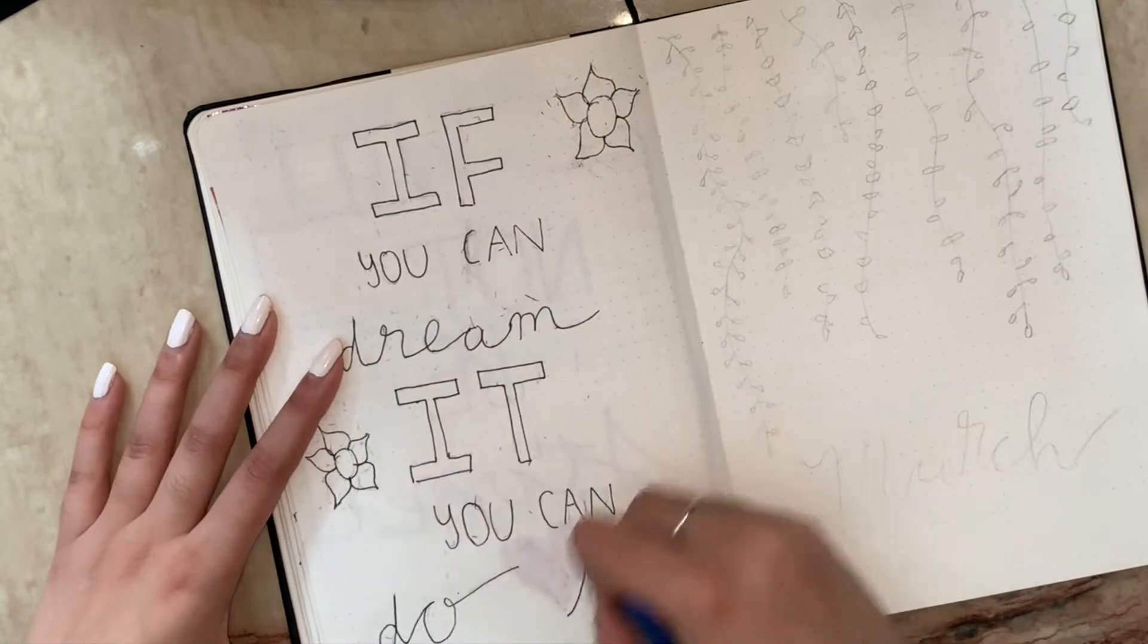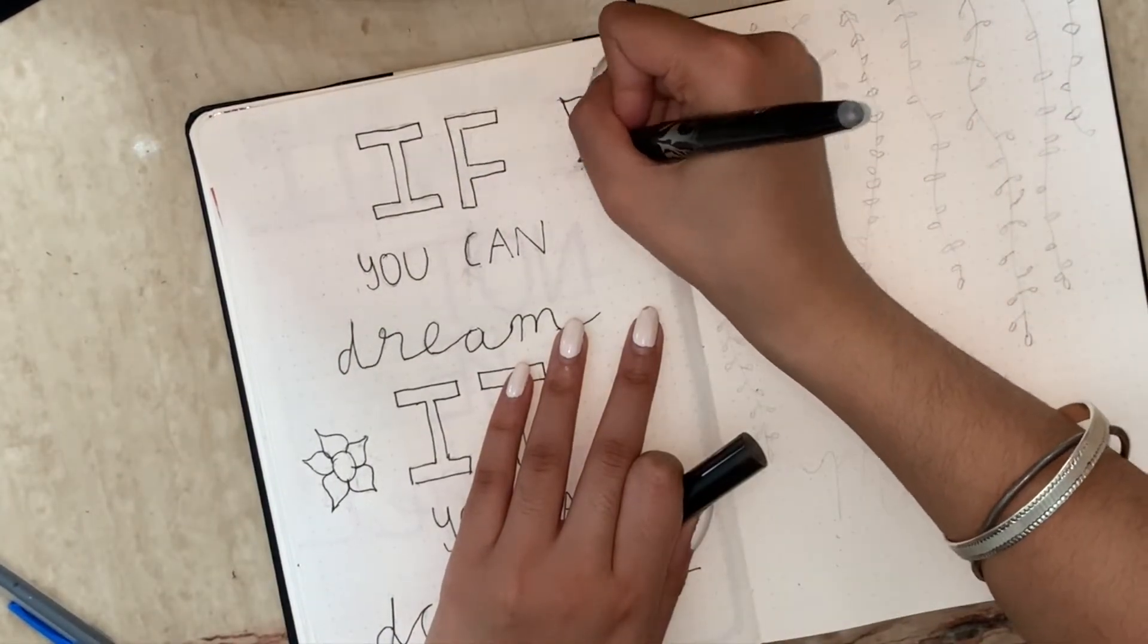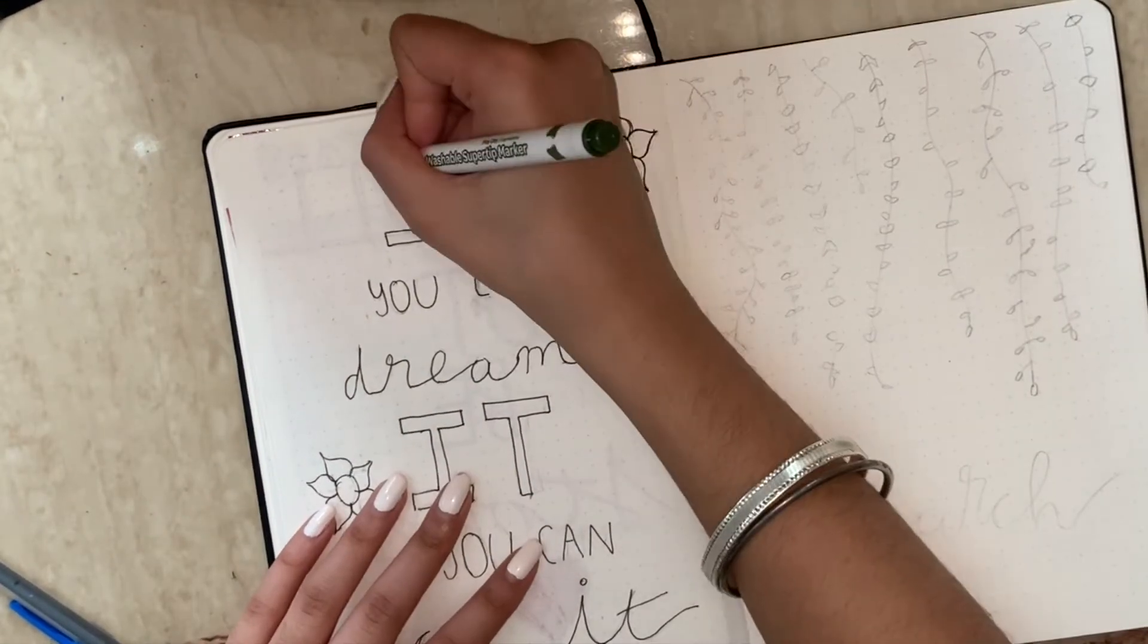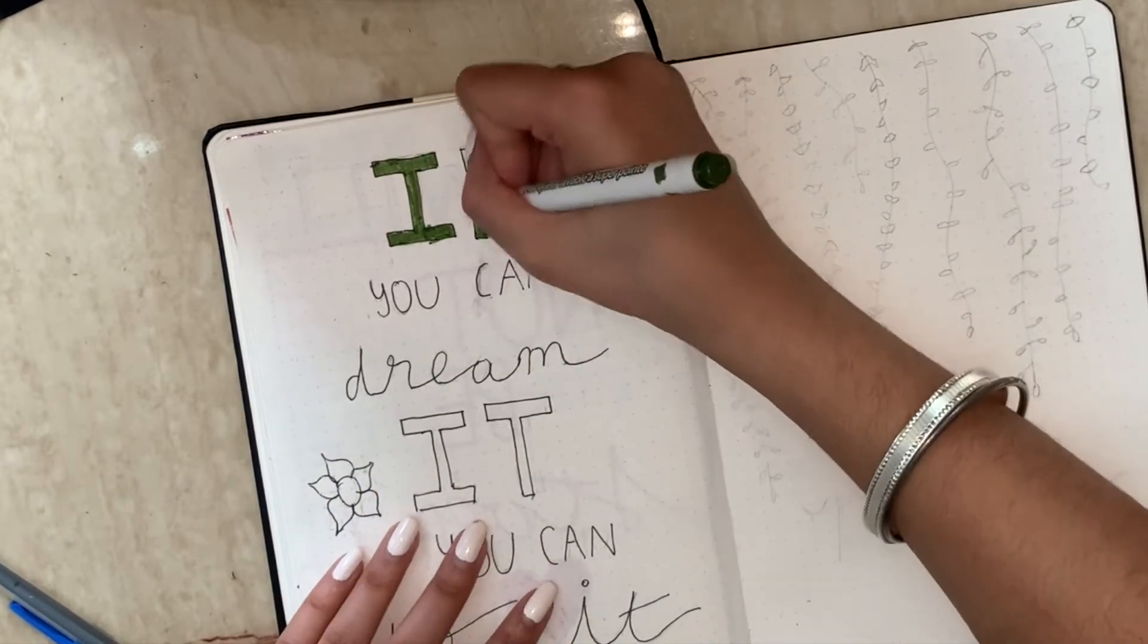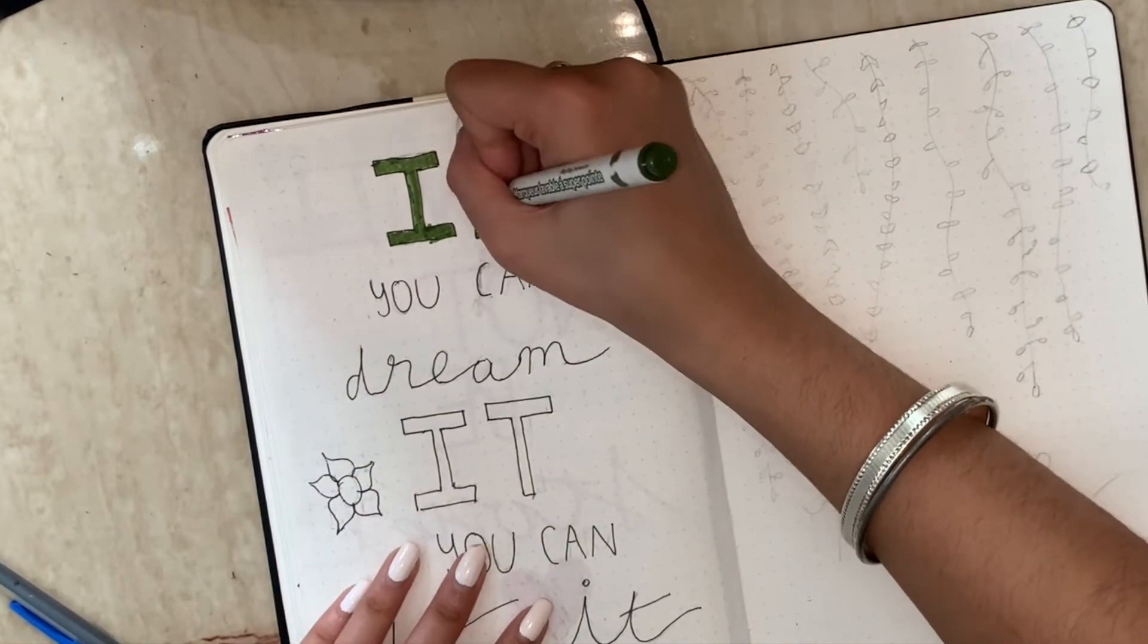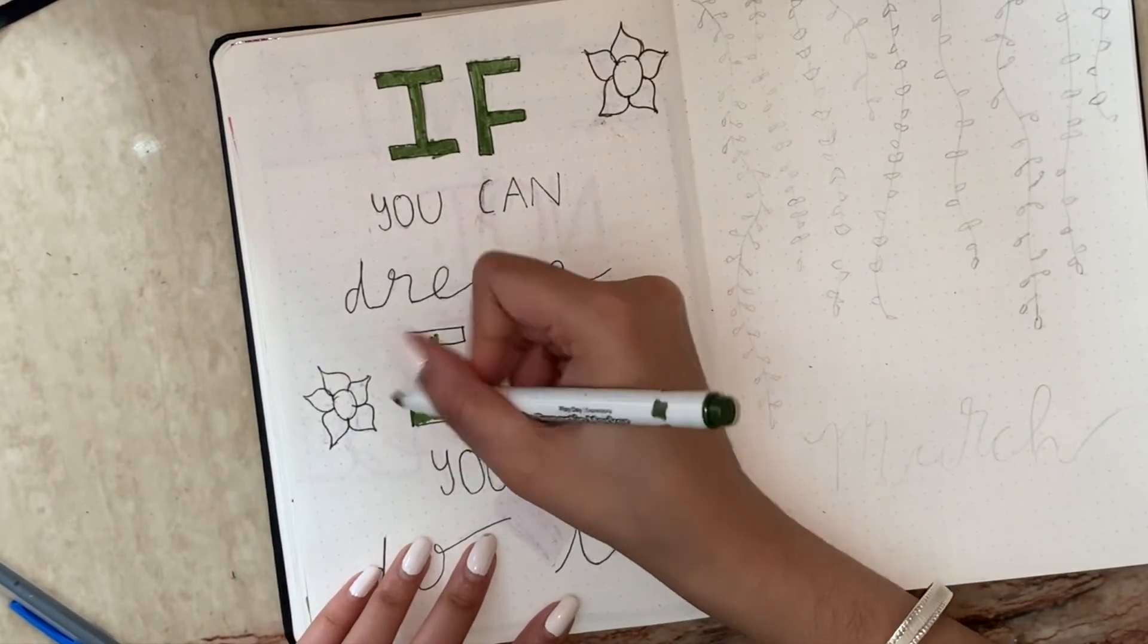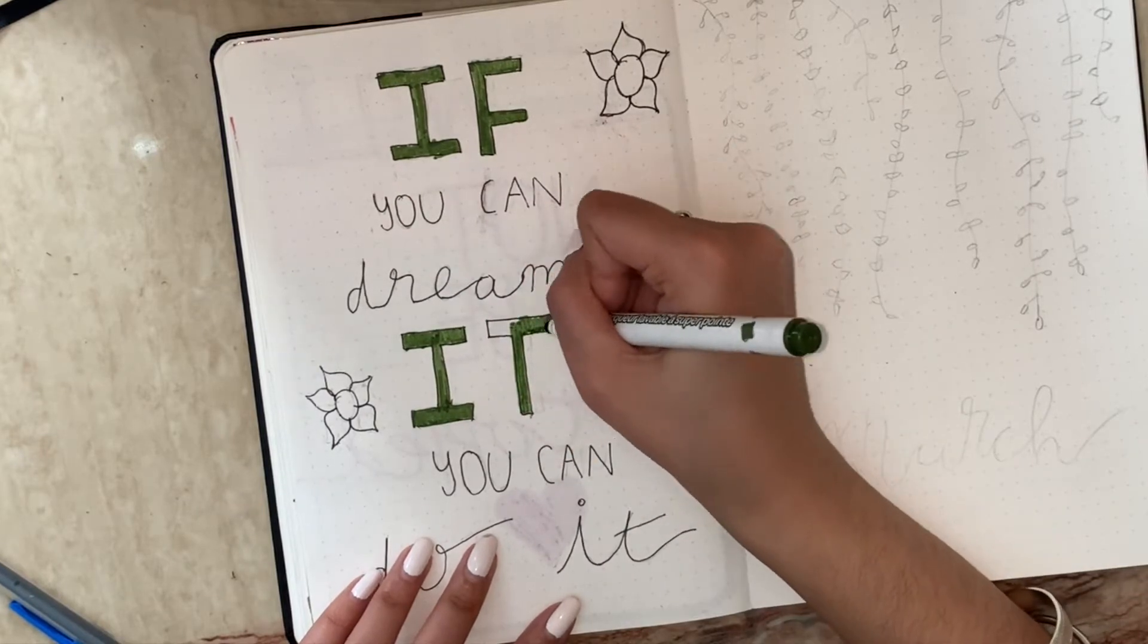Now I'm just erasing - I couldn't find my eraser so I just used the back of the pencil. Now on the next side, wait, before we go to the next side I'm coloring this in. I'm going for the theme of green florals for March and I'm just coloring in the IF with the start green and the IT also.